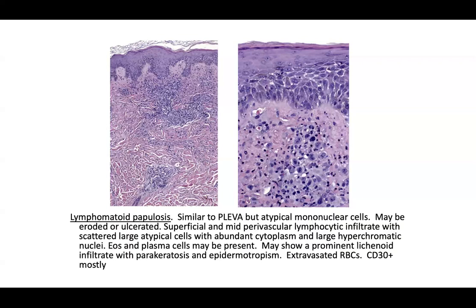Lymphomatoid papulosis can look similar to pityriasis lichenoides et varioliformis acuta (PLEVA), but the cells are mononuclear and more atypical. You can see erosions, ulcerations, superficial and mid perivascular infiltrate, deep dermal infiltrate with atypical cells having large hyperchromatic nuclei, eosinophils, plasma cells, prominent lichenoid infiltrate with parakeratosis, epidermotropism (mainly type B), and extravasated red blood cells. Most cases are CD30 positive; type B is the exception.